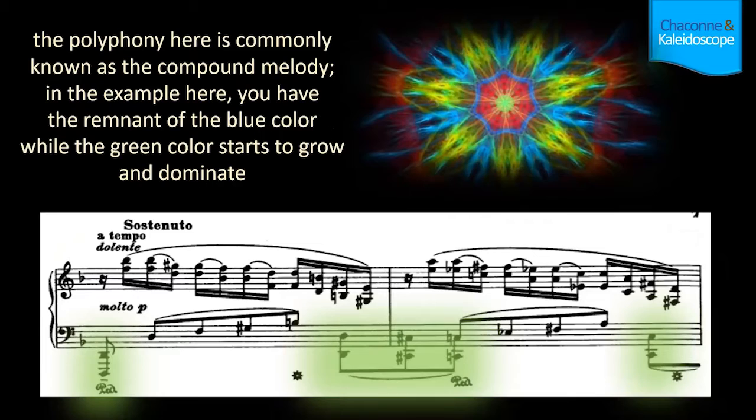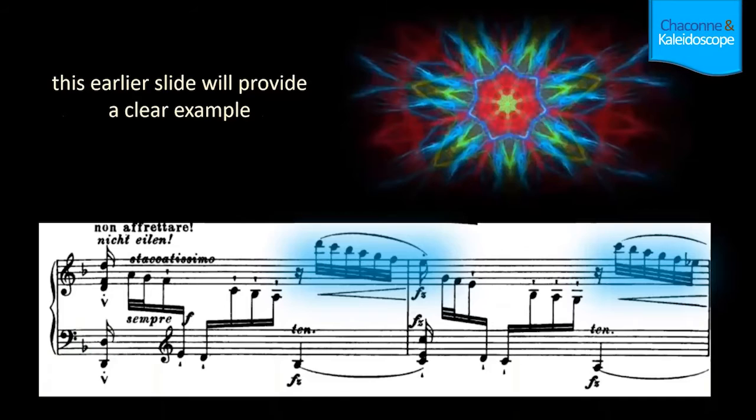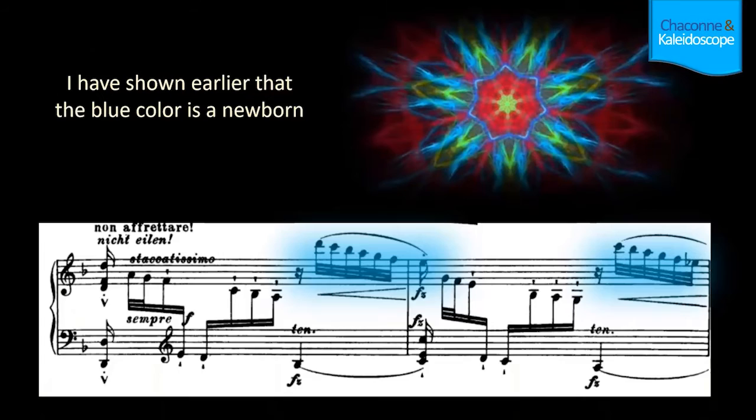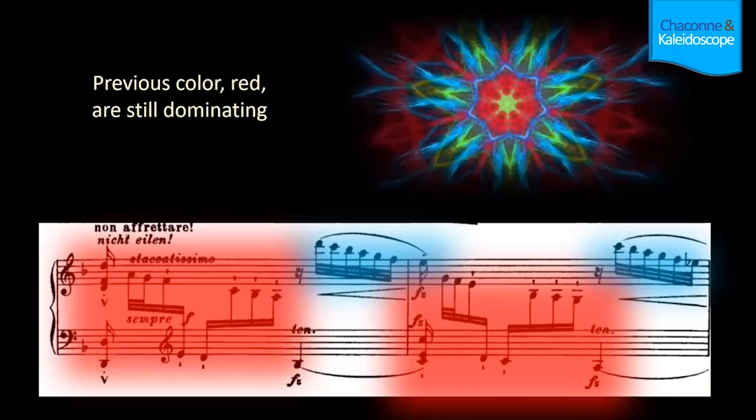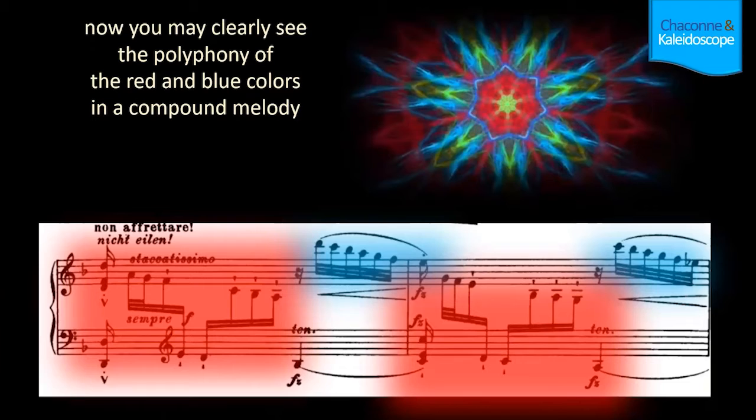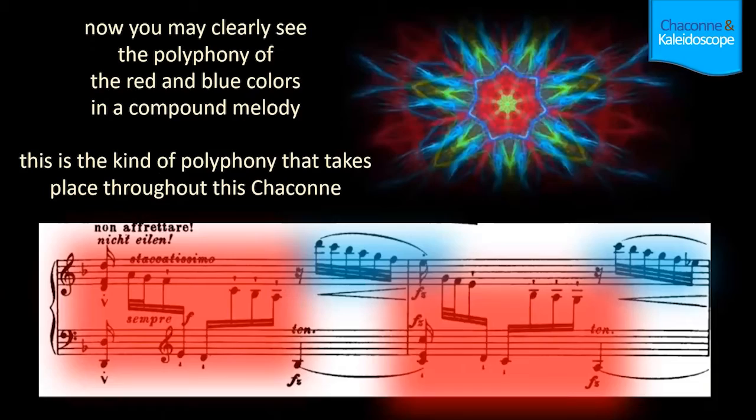The polyphony here is commonly known as the compound melody. In this example, you have the remnant of the blue color, while the green color starts to grow and dominate. Earlier I showed that the blue color is a newborn, while the previous color — red — is still dominating. Now you can clearly see the polyphony of the red and blue colors in a compound melody. This is the kind of polyphony that takes place throughout this Chaconne.